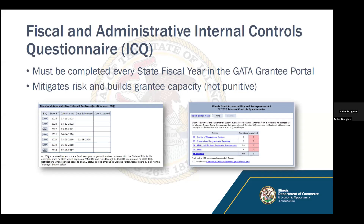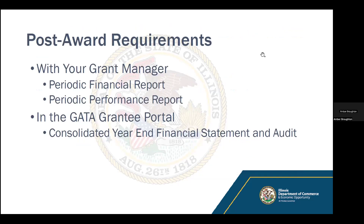The Fiscal and Administrative Internal Controls Questionnaire, or ICQ, is something you can get out of the way in the portal ahead of time. This questionnaire needs to be completed every state fiscal year. It is used to mitigate risk and build grantee capacity. It is not punitive and does not determine whether or not you'll receive funding. You'll be asked a series of questions about your quality of management systems, financial and programmatic reporting, your ability to effectively implement requirements, and your audits. It's completed in the GATA grantee portal.